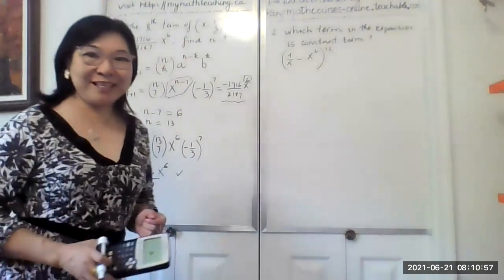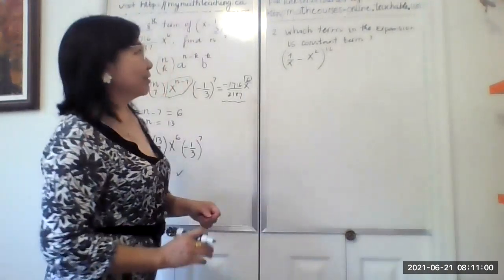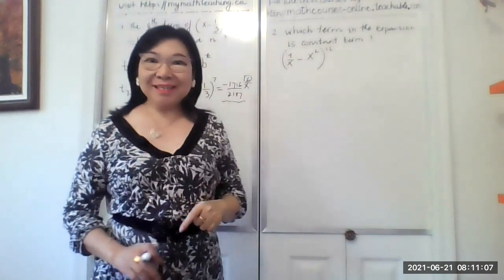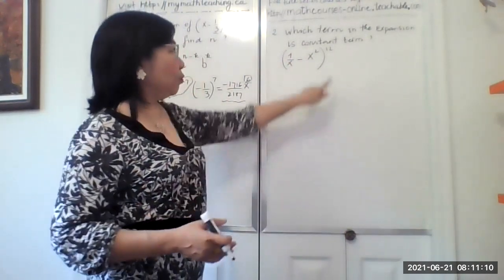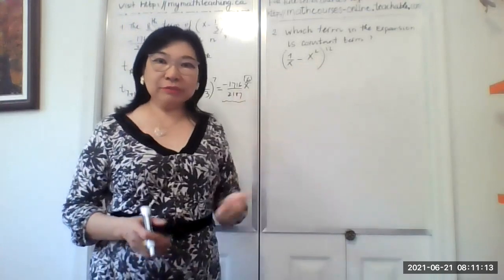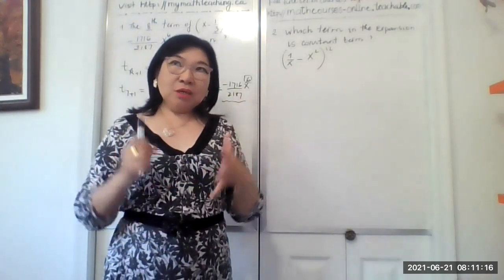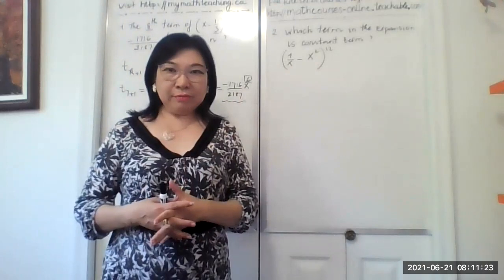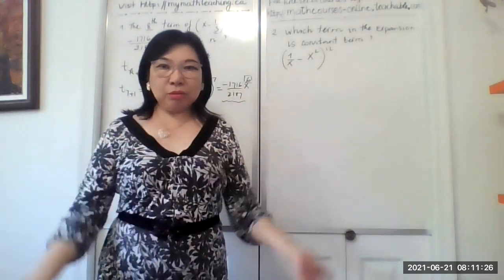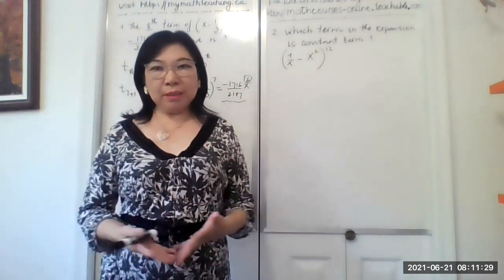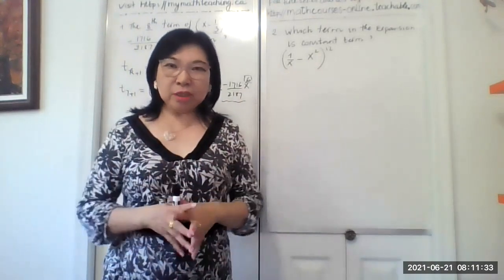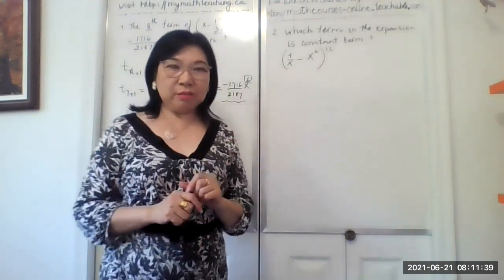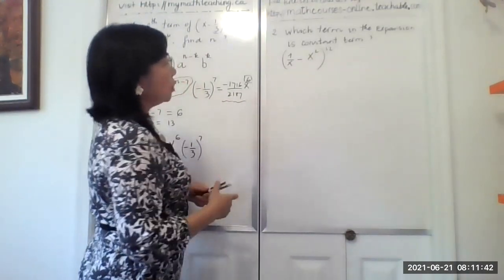Now let's go to number 2. Number 2 asks which term in the expansion is the constant term. We have the power n here is 12 and they ask for constant term. Constant term means you only have a number coefficient in front of the letter but there's no letter there. How do we answer this question?